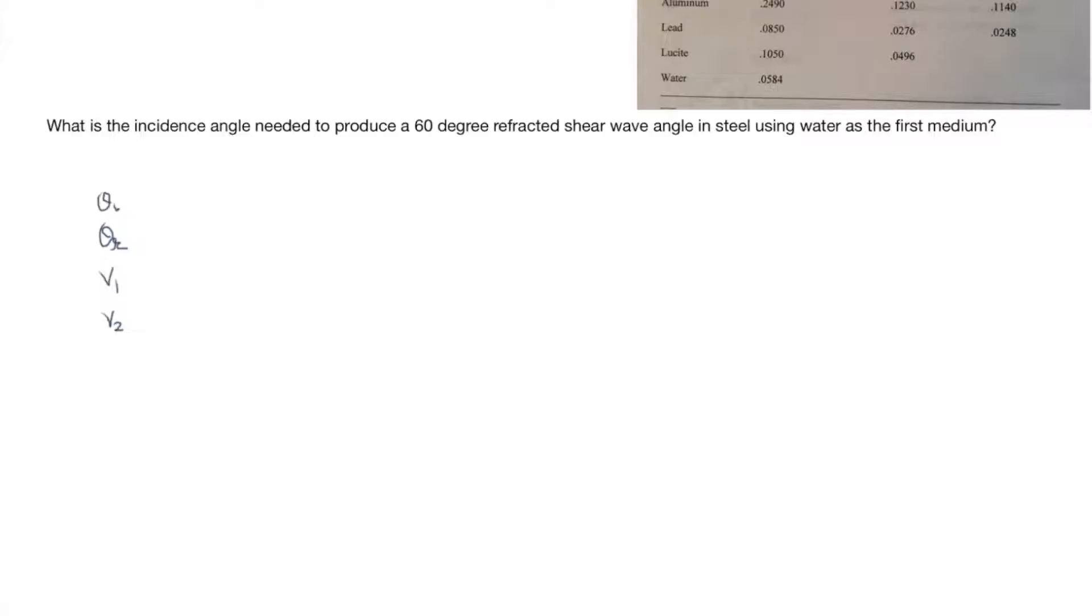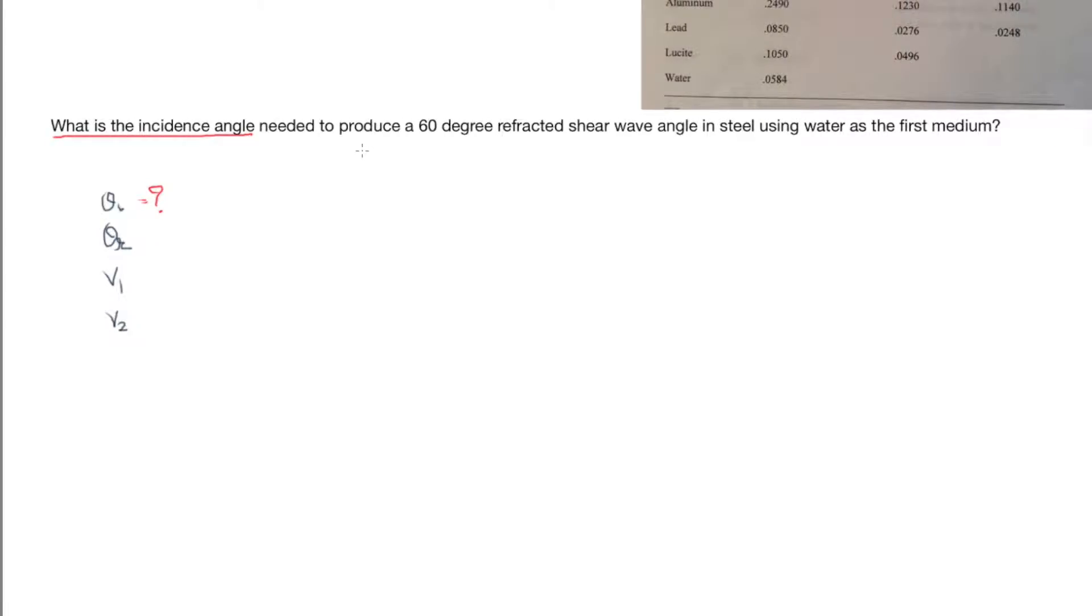Theta I is the angle of incidence. So what is the incident angle? This angle, which is my question, needed to produce a 60 degree refracted angle, so my refracted angle is 60.